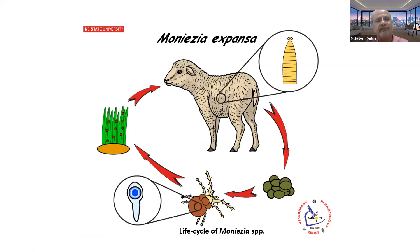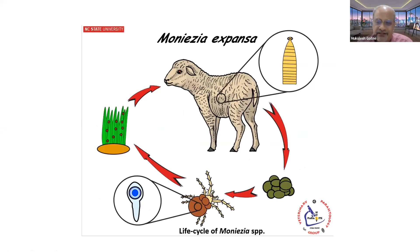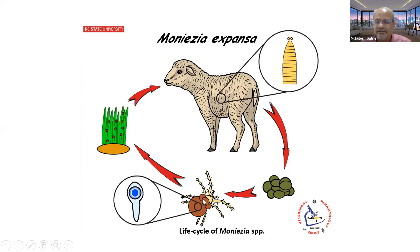Now let me talk about the tapeworm. The most common example is Moniezia expansa, which is present in the small intestine. The gravid proglottids are voided in the feces and these proglottids appear like boiled rice particles. Eventually, these proglottids disintegrate, the eggs are released, and these eggs are consumed by oribatid mites.